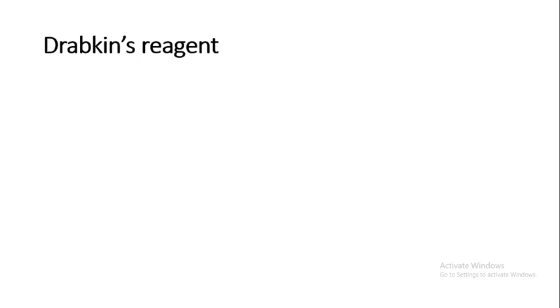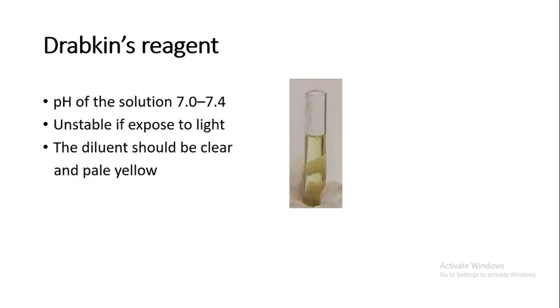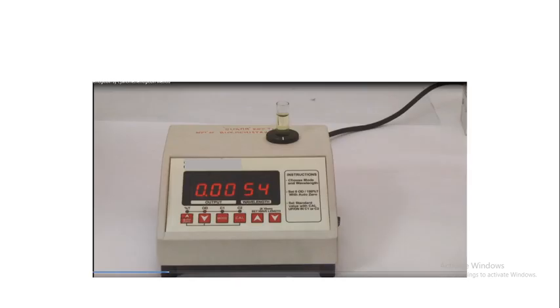Properties of the solution: The pH should be checked every month and maintained between 7 to 7.4. It is unstable if exposed to light. The solution should be clear and pale yellow in color. When measured against distilled water as blank in spectrophotometer at 540 nanometers, the absorbance should be zero.